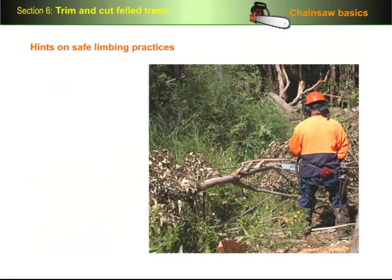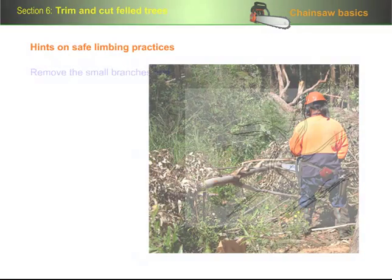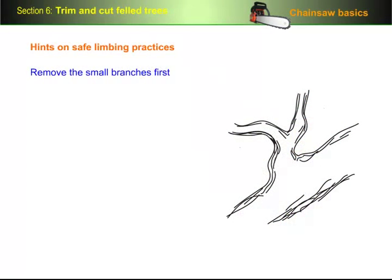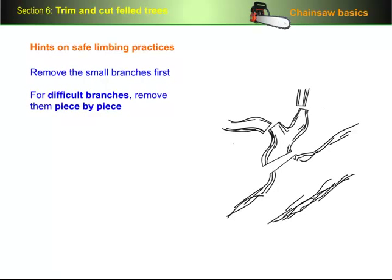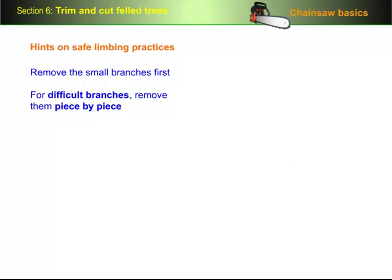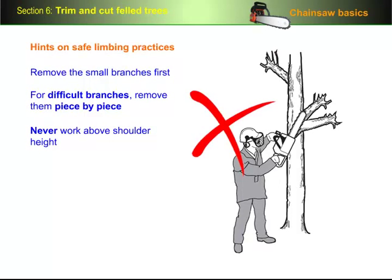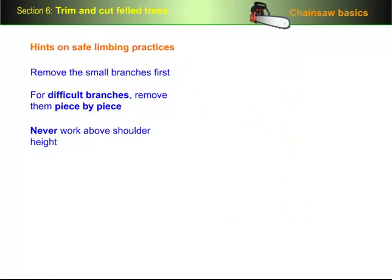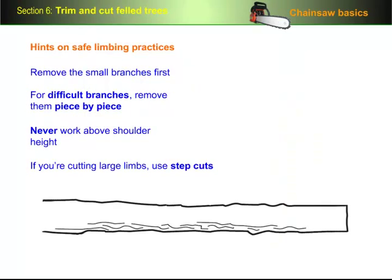Here are some hints on safe limbing practices. Remove small branches first and clear them out of the way. For difficult branches, remove them piece by piece, cutting in sequence from the outside towards the main trunk. Never work above shoulder height, because that's where you'll have the least amount of control over the saw's movement. If you're cutting large limbs, use step cuts or other techniques used in cross cutting logs so that you don't jam the saw.